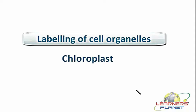The common organelles or diagrams asked from the chapter 'Fundamental Unit of Life' include chloroplast, eukaryotic or prokaryotic cells, animal or plant cells, and different organelles like nucleus, chloroplast, mitochondria, and so on. So in this session we are simply discussing how to label the diagram of chloroplast.